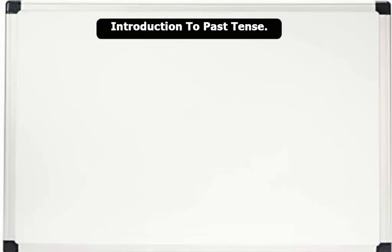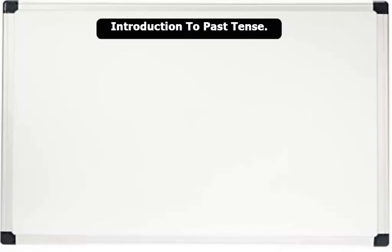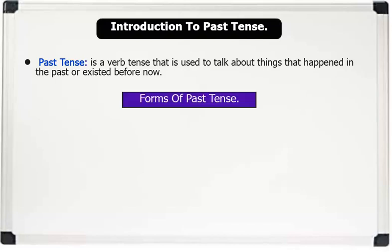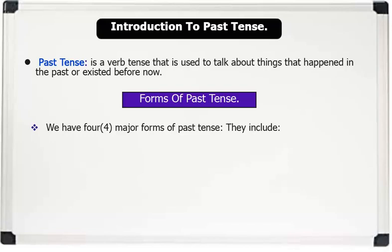Introduction to past tense. Past tense is a verb tense that is used to talk about things that happened in the past or existed before now. We have 4 major forms of past tense.